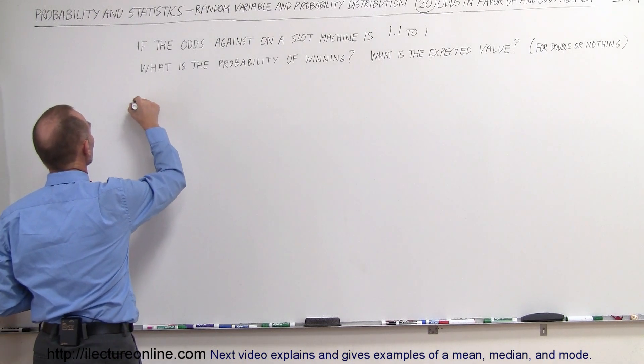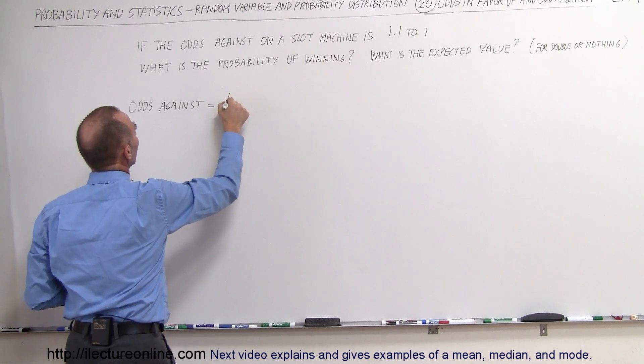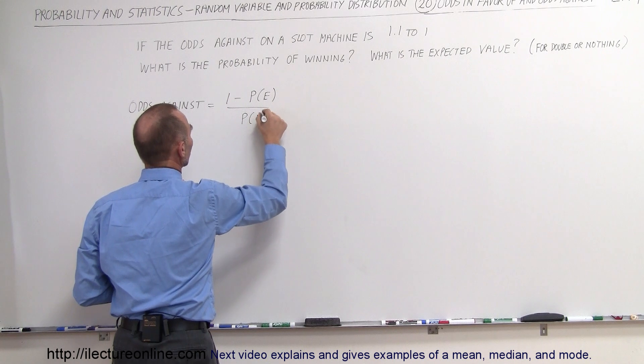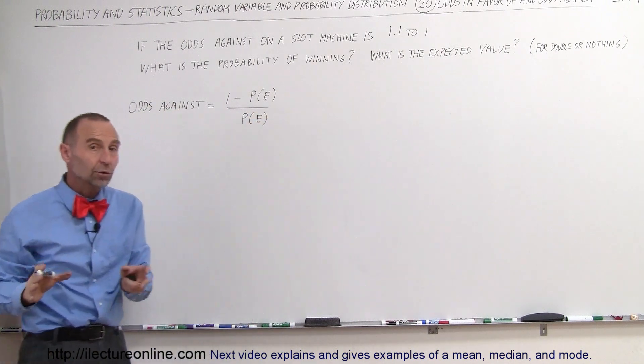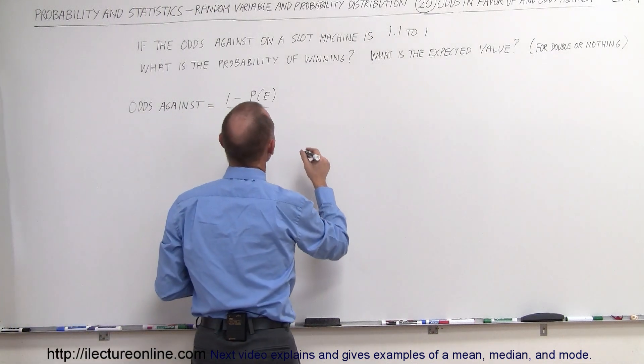So the odds against the definition is equal to 1 minus the probability of the event occurring divided by the probability of the event occurring. And again, the probability of the event occurring is the probability of winning. Okay, so the odds are 1.1 to 1.